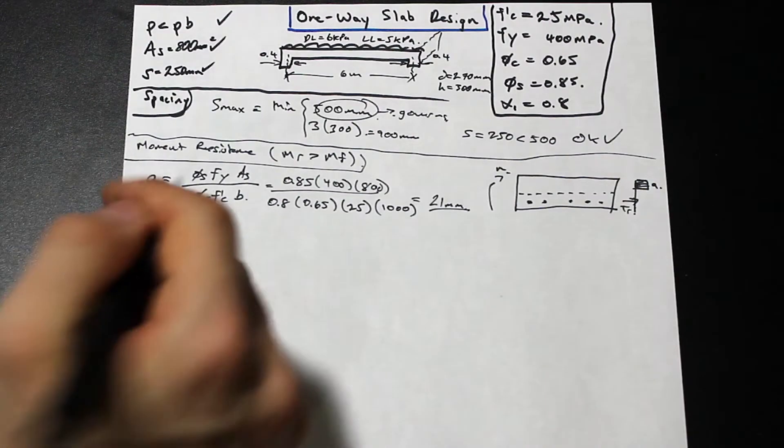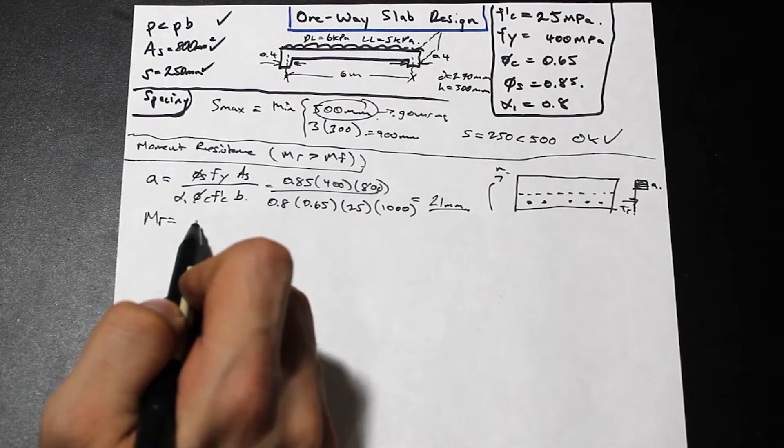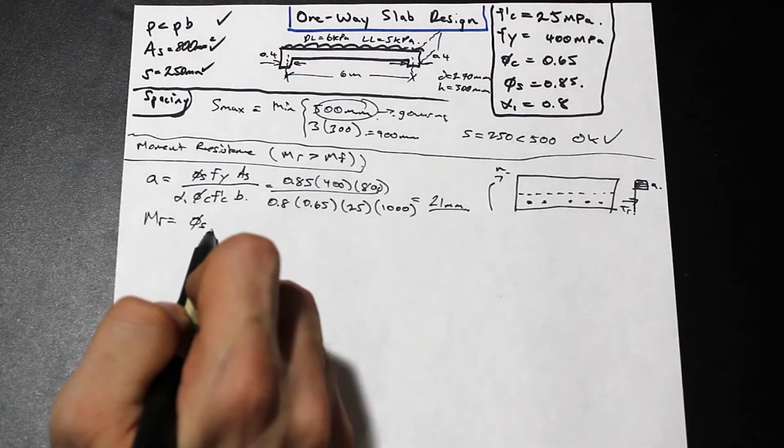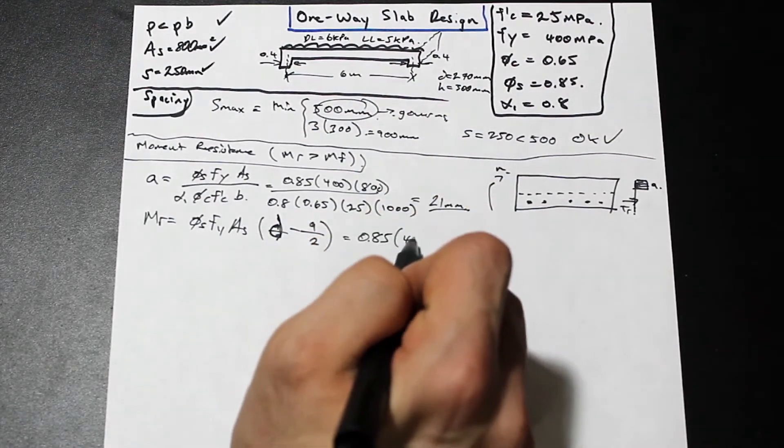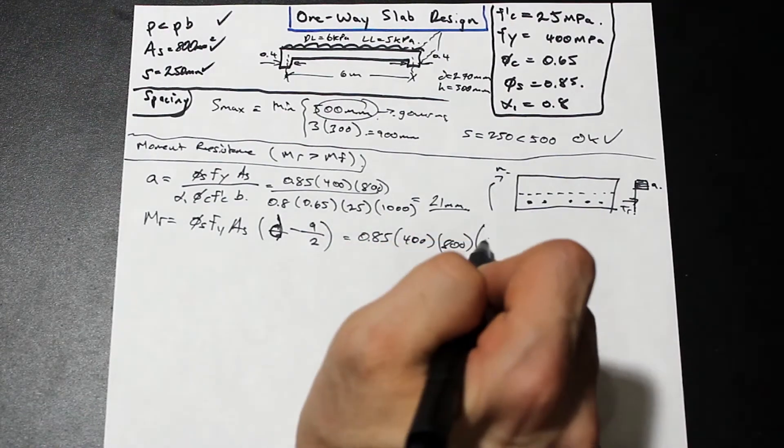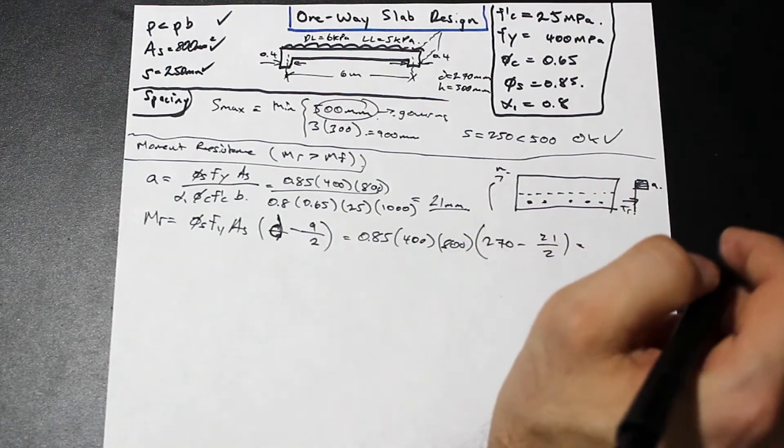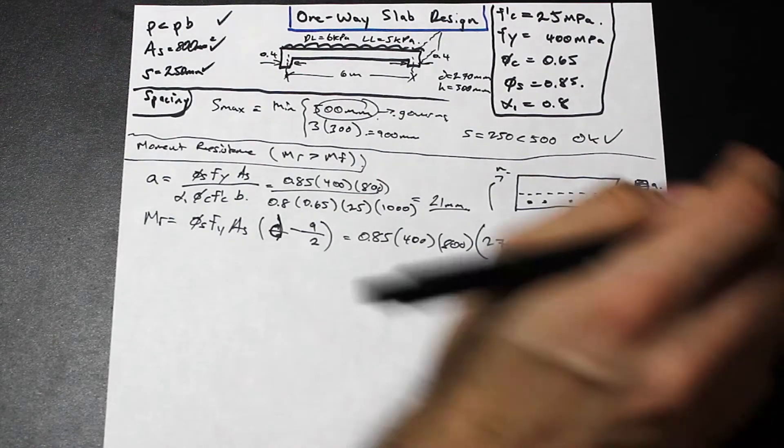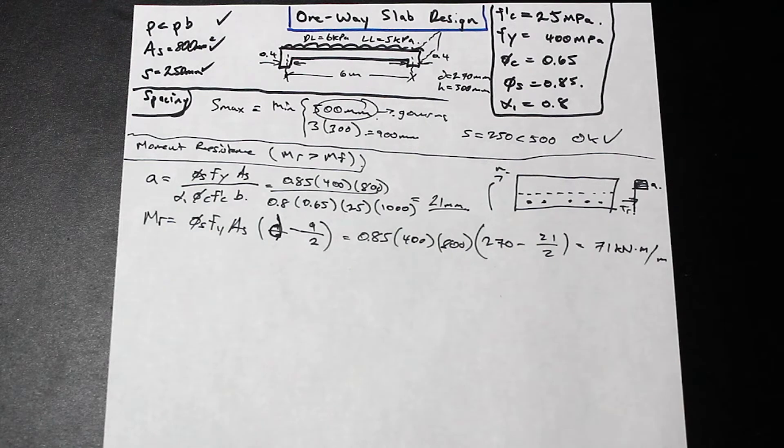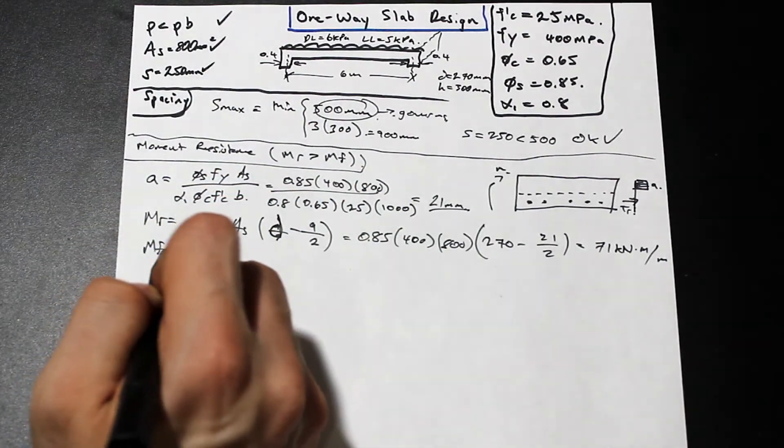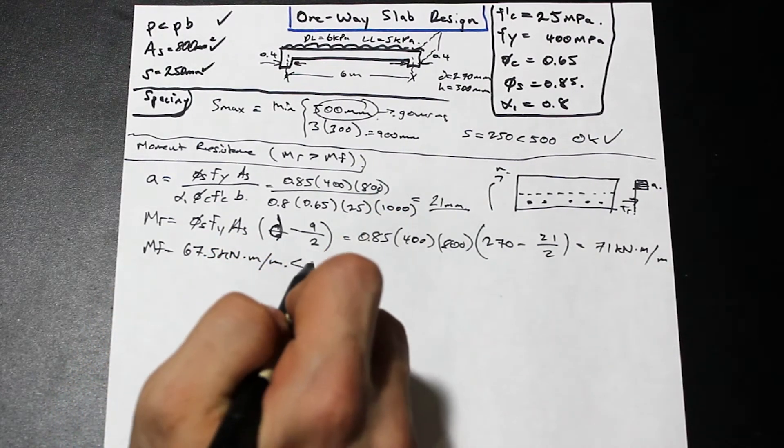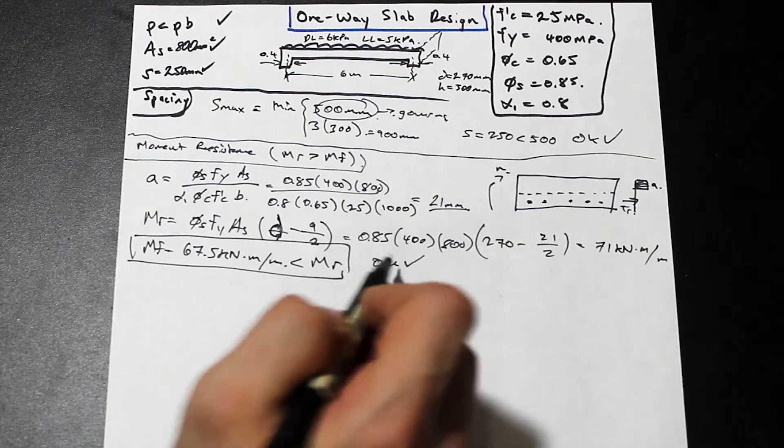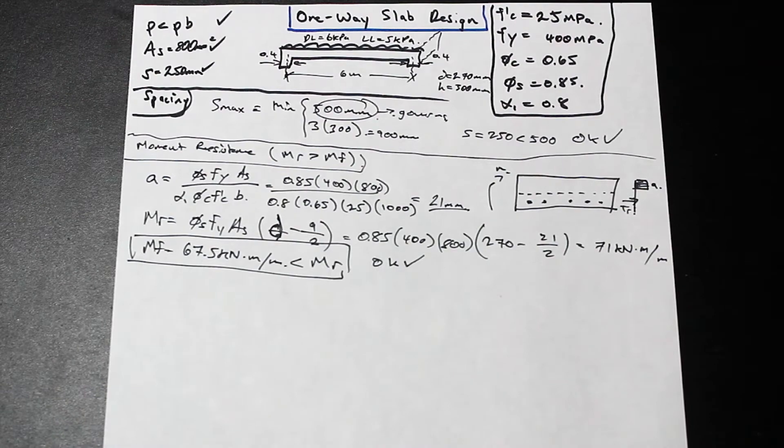That's exactly what we need in order to calculate our moment resistance of our slab. If you'll remember from pretty basic concrete stuff, we have tr times d minus a over 2. Our d in this case is 270 minus a over 2. We're going to get a value of 71 kilonewton meter per meter strip. Now all we need to do is compare this to our factored moment. From previously when we designed for the steel, our factored moment was 67.5 kilonewton meter per meter, which is less than MR. So we're okay. Our slab, the steel that we provided, is enough in order to resist the moment.